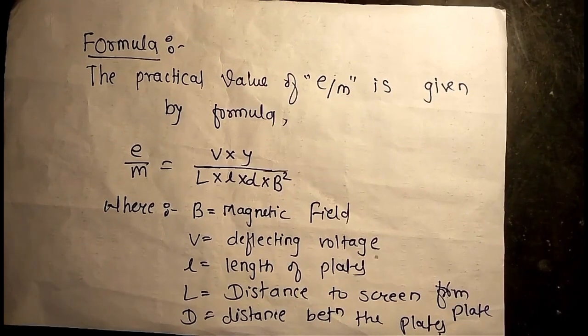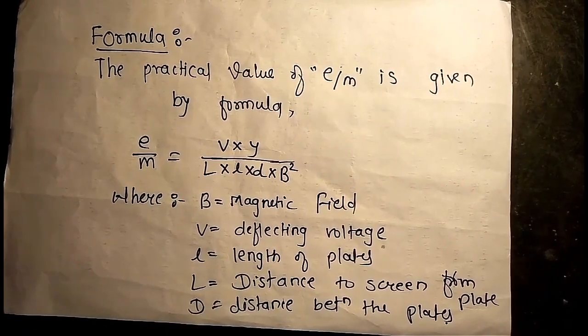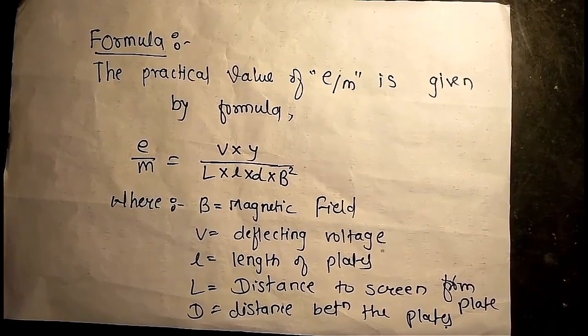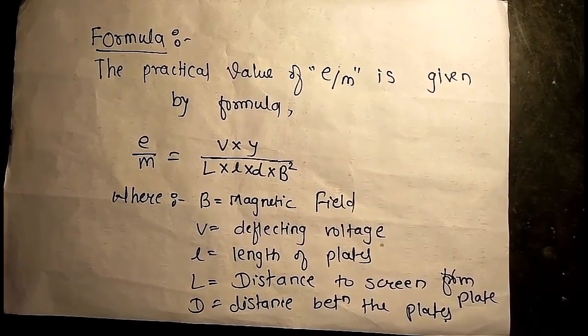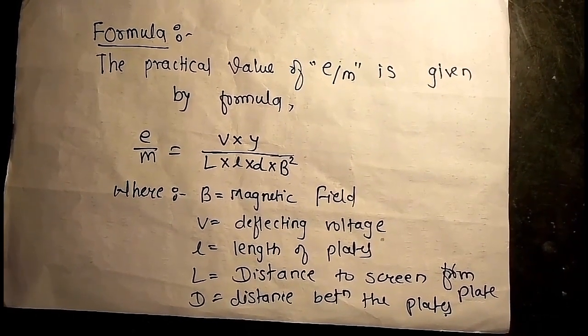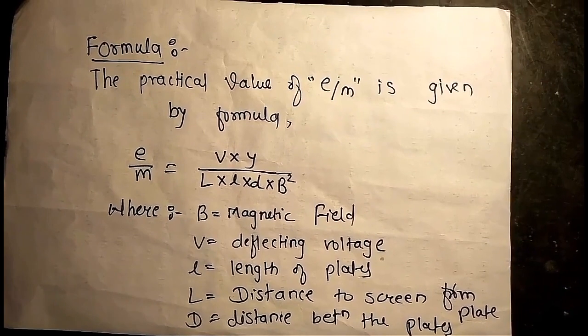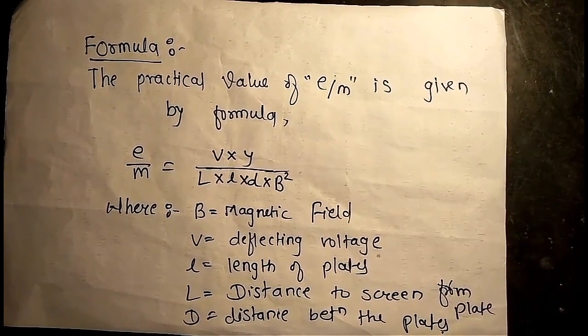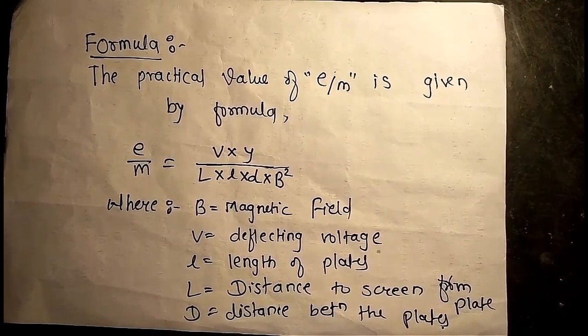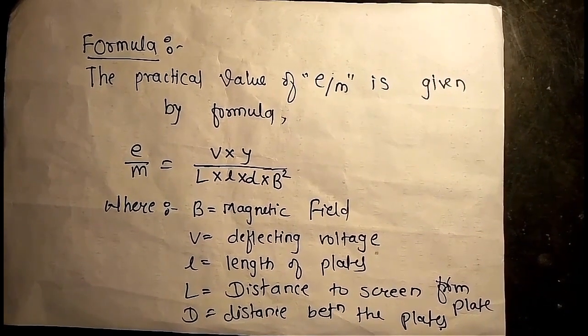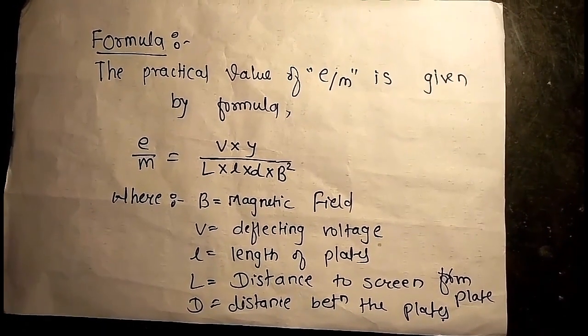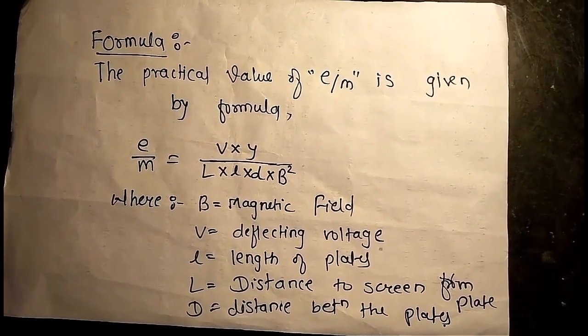The formula: E by M is equals to V into y upon L into l into d into B square, where B is magnetic field, V is deflecting voltage, l is length of plates, L is distance to screen from plate, and D is distance between the plates.